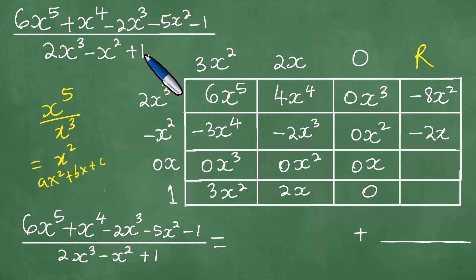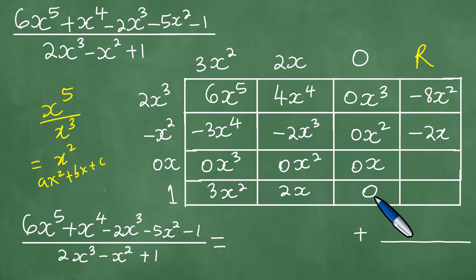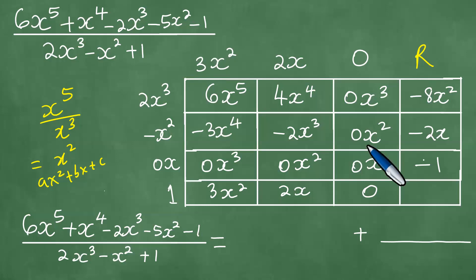Now we deal with the constants. There is a 0 here, and we must put something that adds to it to match the numerator. So 0 minus 1 gives minus 1, and that is exactly the minus 1 that appears in the numerator. That's why we put minus 1 here.